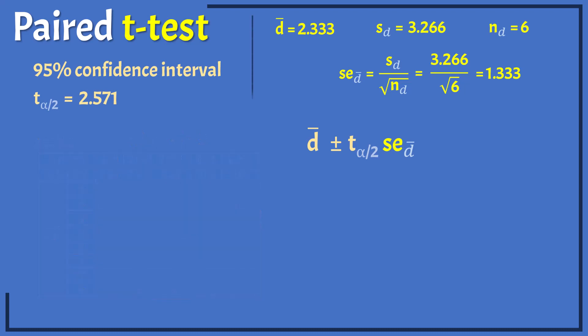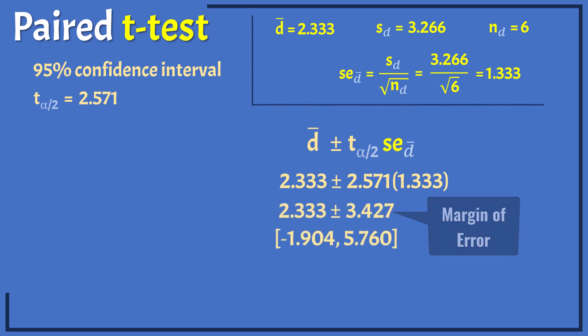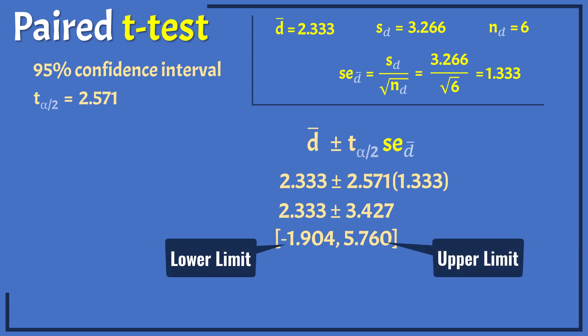Now, substituting the values, we have a margin of error of 3.427, a lower limit of negative 1.9 and an upper limit of 5.76.